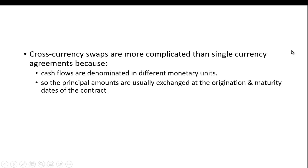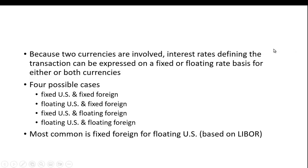Cross-currency swaps are more complicated than single currency agreements. With an interest rate swap you're dealing with a single currency, which makes it much easier. The cross-currency swap is complicated because cash flows are denominated in different monetary units, and the principal amounts are usually exchanged at the origination and maturity dates of the contract. Because you have two currencies and interest rates can be either fixed or floating, you have four possible cases.